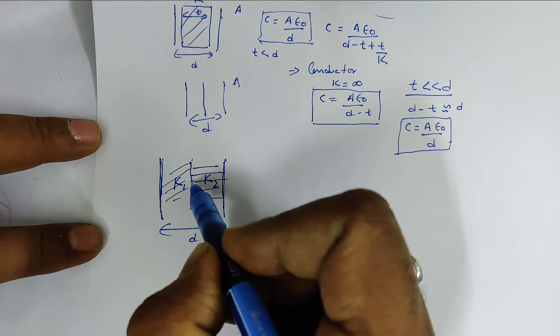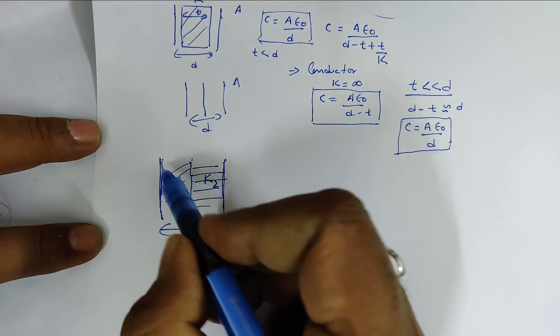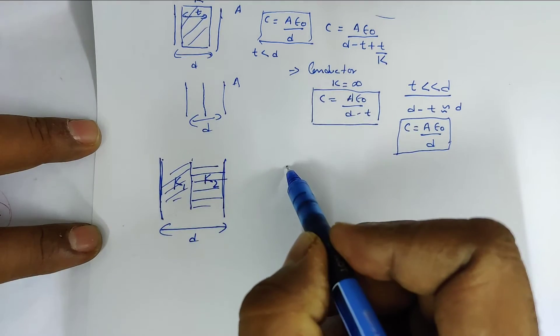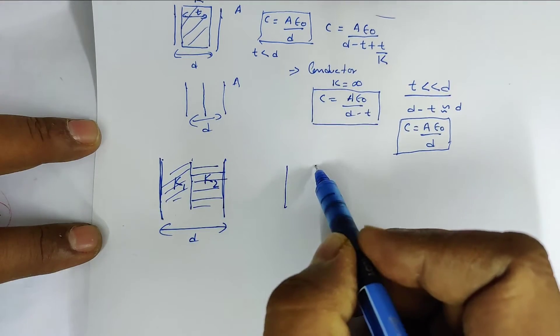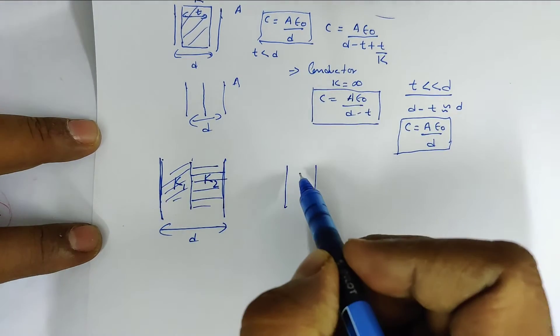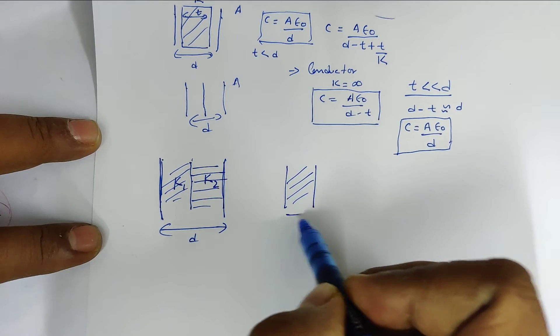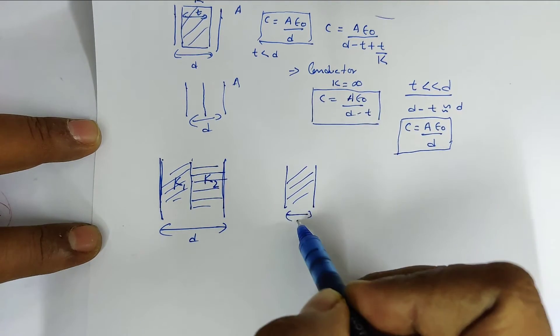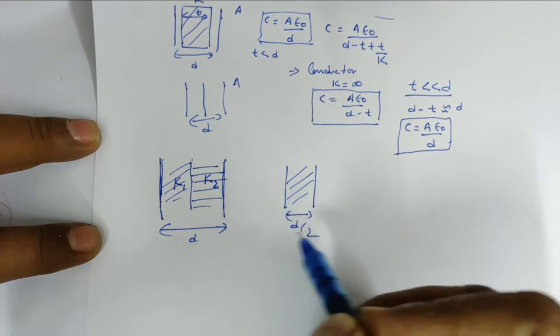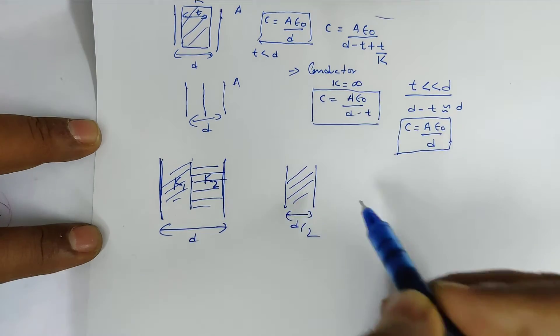So the capacitor is split into two parts. The first capacitor has plate separation D/2, and the second capacitor also has separation D/2, so the total separation equals D.